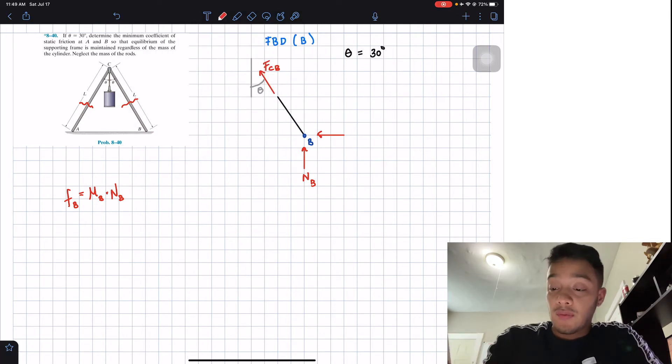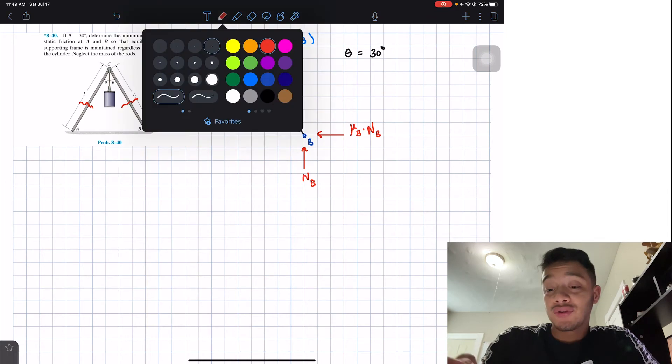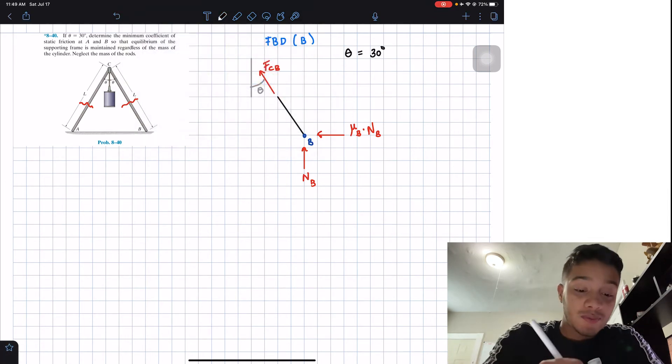Now, we know that we want to find this coefficient of static friction, so we're going to leave it as that, multiplied by my normal B. And this is our force that's going to the left. So after finishing our free body diagram, what do you guys think we're going to do? Obviously, we're just going to do and apply some summatory of forces and let's see what we find out.